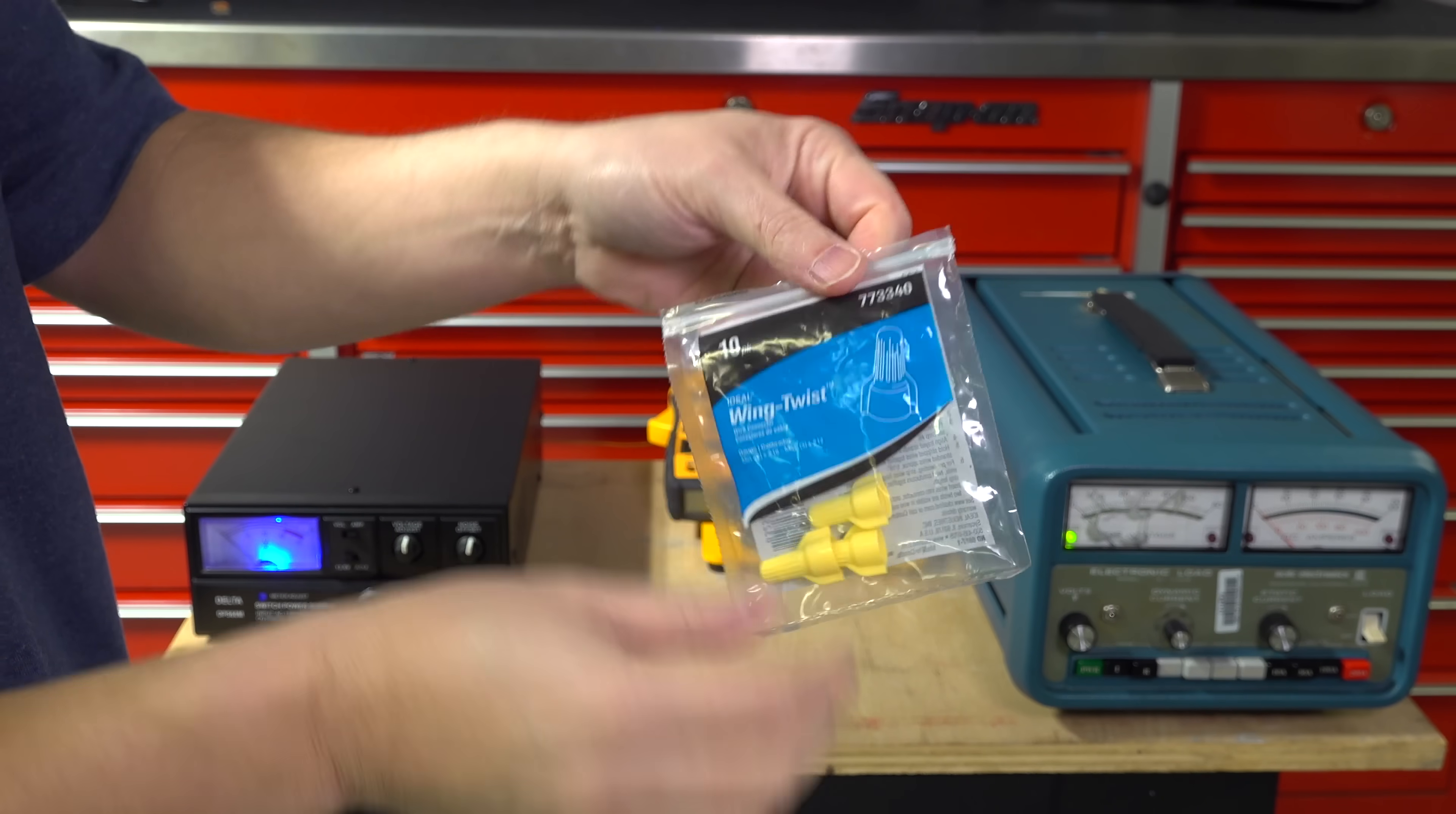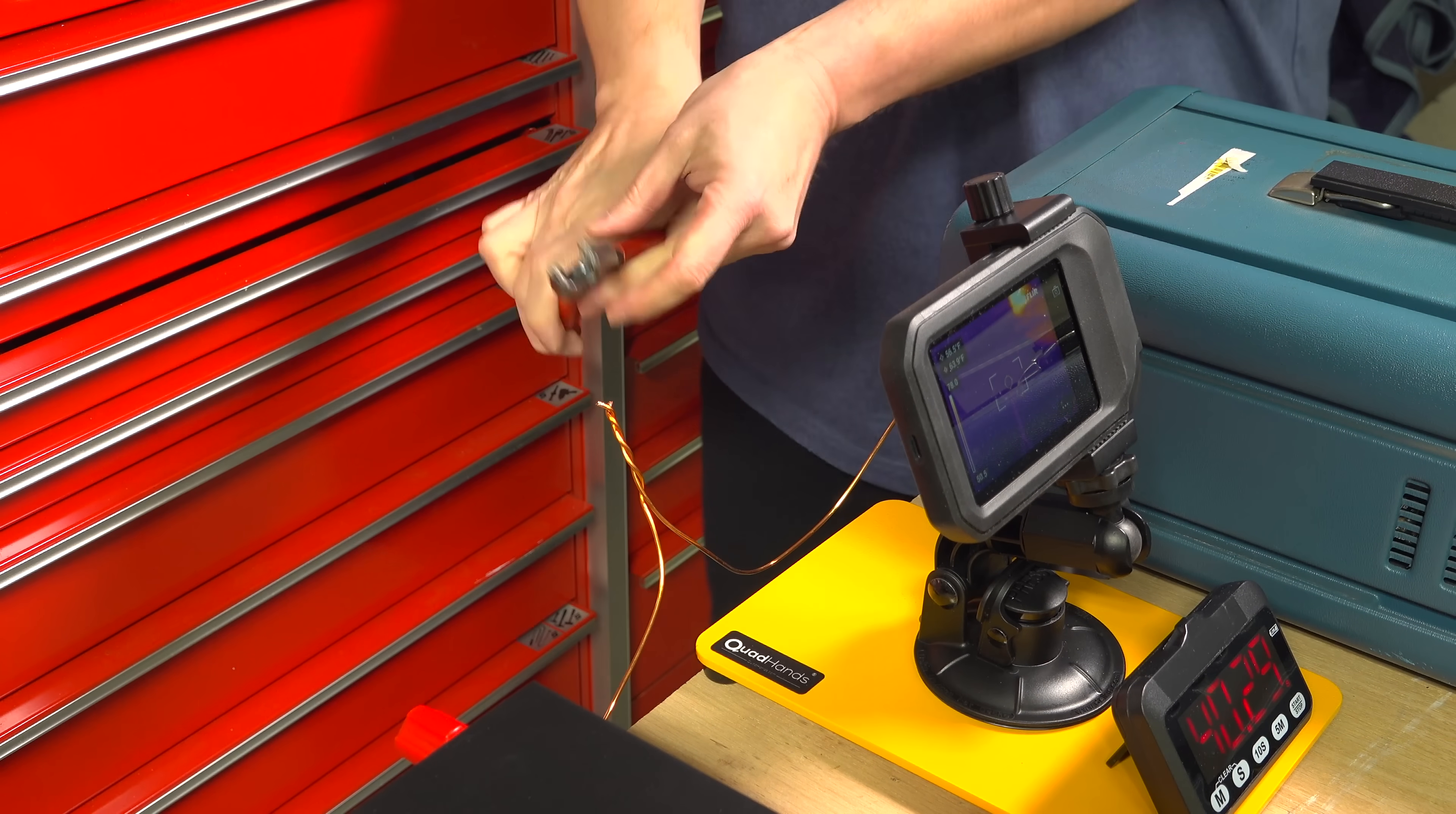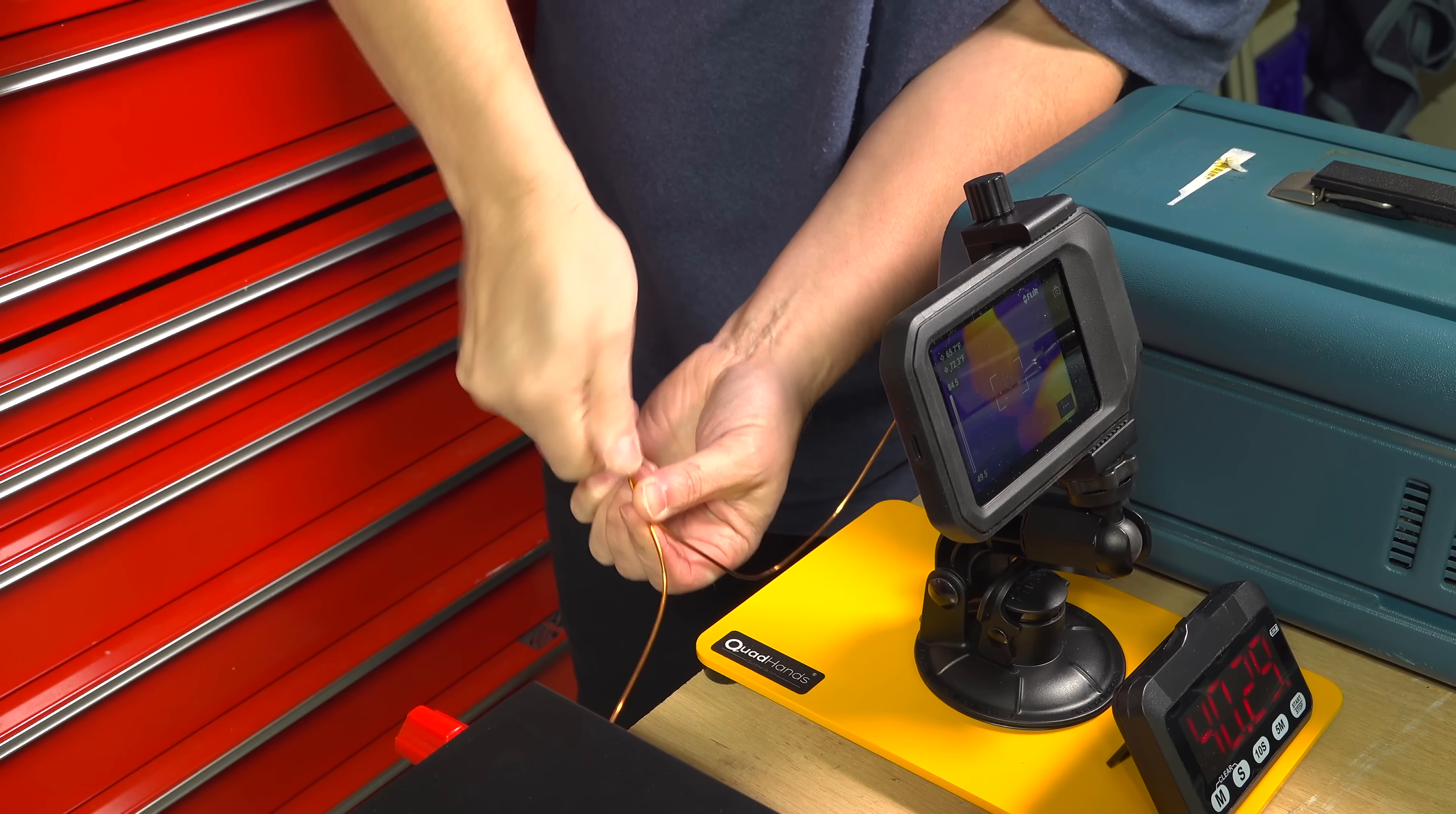But how well would a wire nut do? So here I'm using an ideal wire nut that's rated for the same amount of wires that the Wego was. And I wanted to pre-twist it because I knew if I didn't do this I'd get a lot of comments about it even though the directions say it's not required. With the nut in place, we're ready to begin.